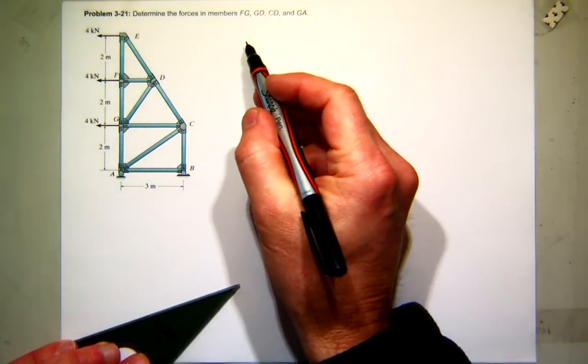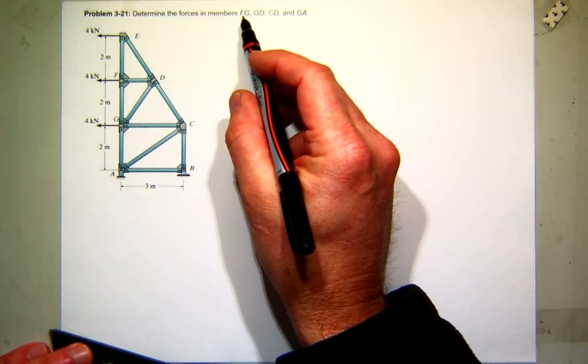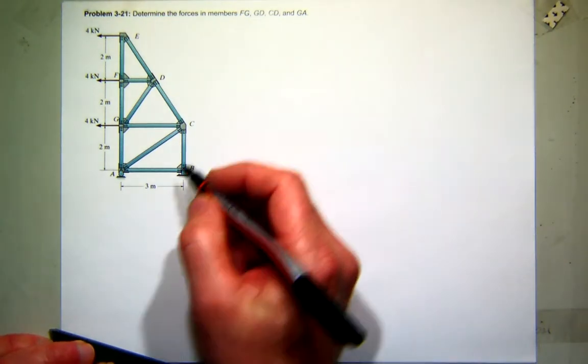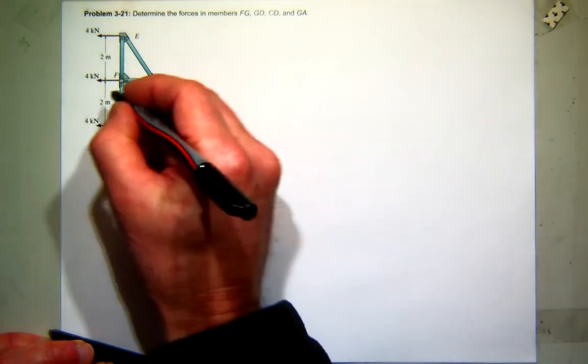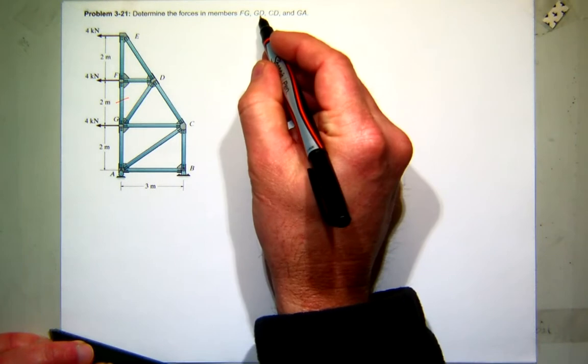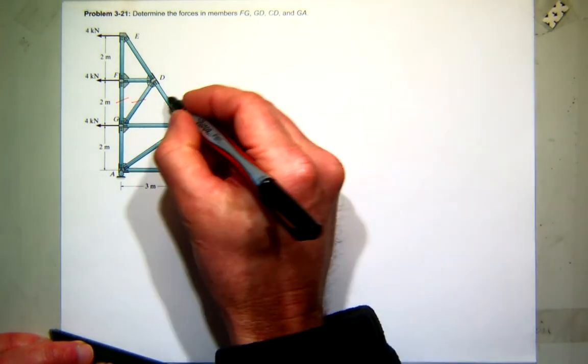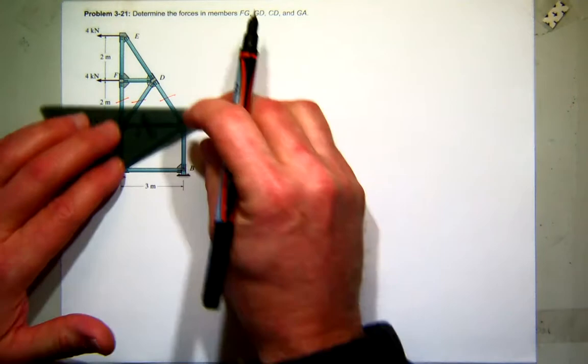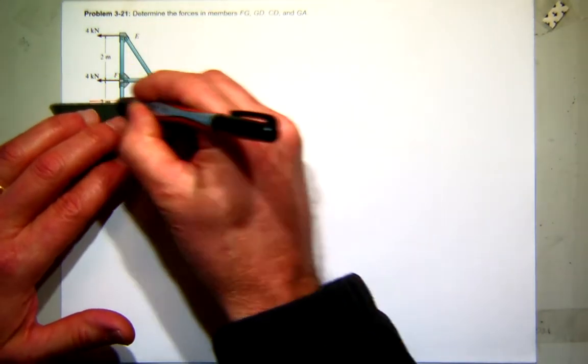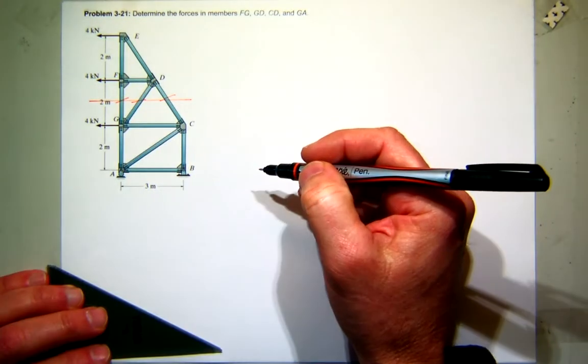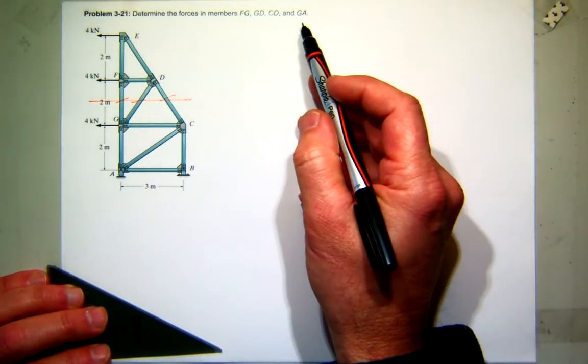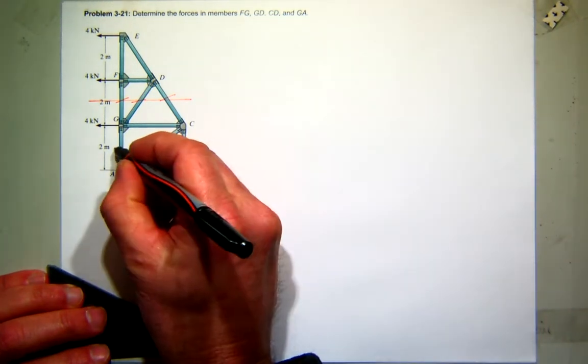So what I like to do first is just go ahead and mark them down. So FG, let's see, FG, that's this one. GD, that's this one. CD, that's this one. Well that's nice, so that looks like we can do a section right through there. And then it also wants GA. Where's GA? That's this guy right here.